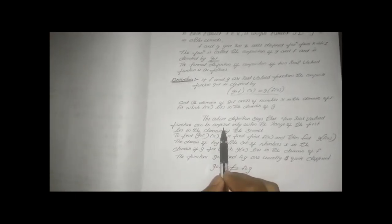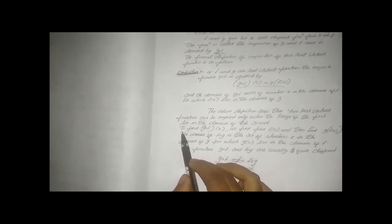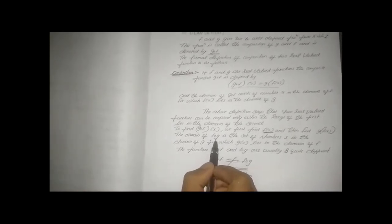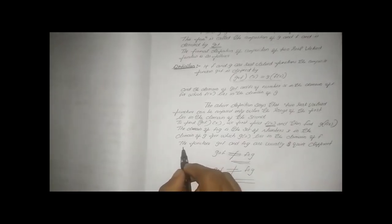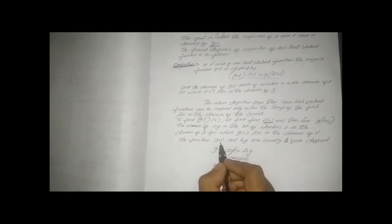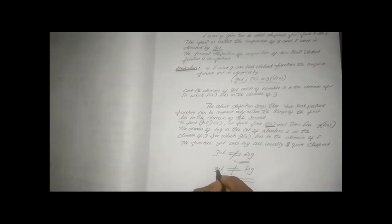Two real-valued functions can be composed only when the range of the first lies in the domain of the second. The domain of f∘g is the set of numbers x in the domain of g for which g(x) lies in the domain of f. The functions g∘f and f∘g are usually quite different — in general, g∘f is not equal to f∘g.